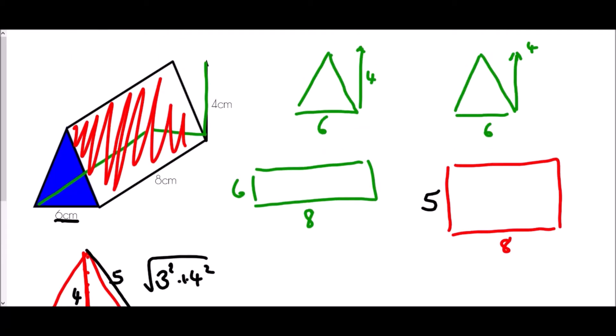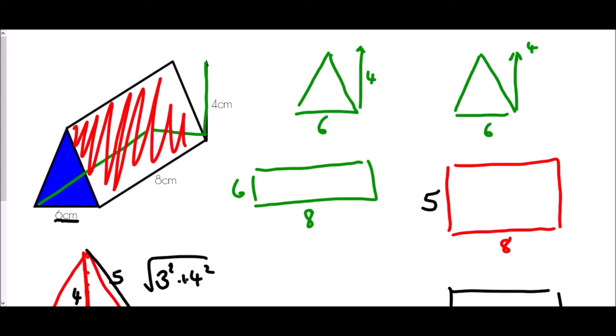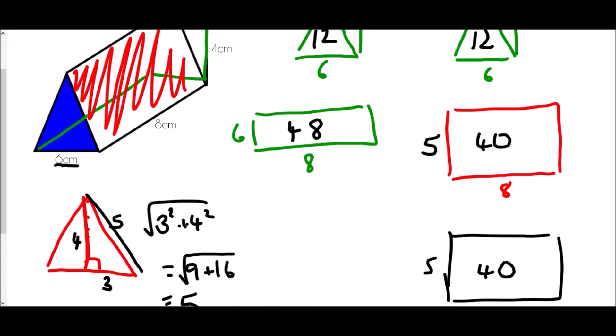We have to remember that the back of the shape is the same as the front, so that's also five by eight. Working out each area: the triangles are half of six times four, which is 12 each; six times eight is 48; and five times eight is 40, also 40 for the other slant. Adding 40 + 40 + 48 + 12 + 12 gives 152 centimeters squared.